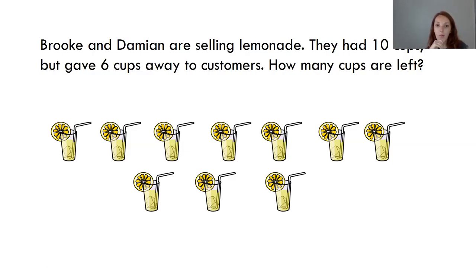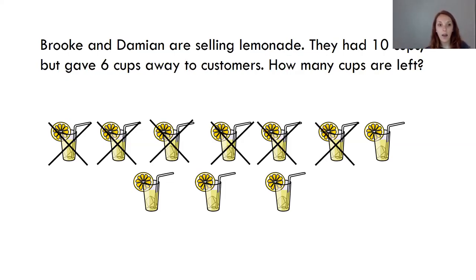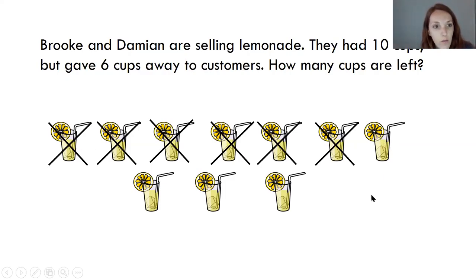I think I could probably cross them out to show that. So I'm going to cross out how many cups were taken away — six. Six cups were taken away. My question was how many cups are left? These cups have been taken away, so let's figure that out by counting up how many cups are left. There are four cups of lemonade left.